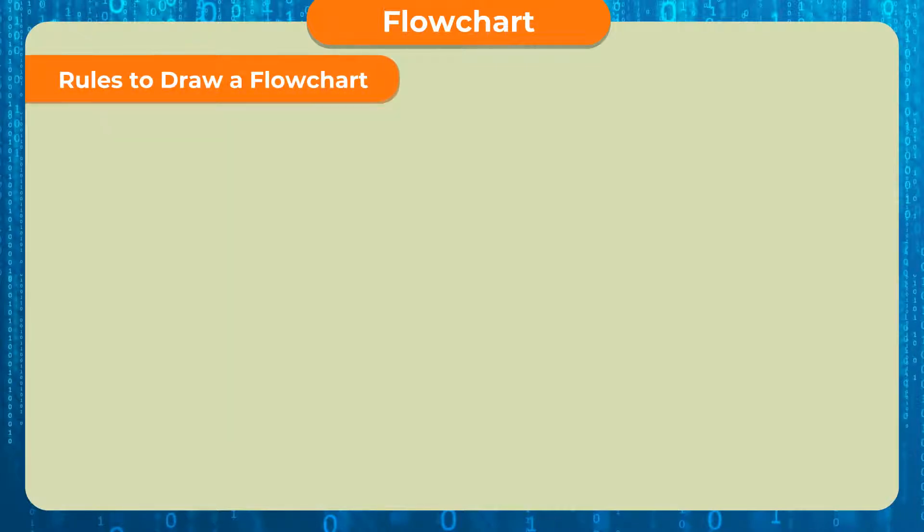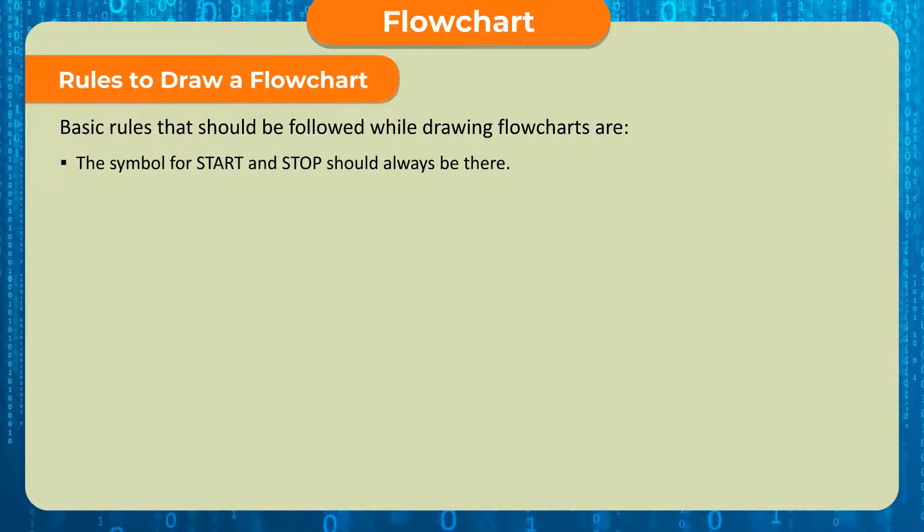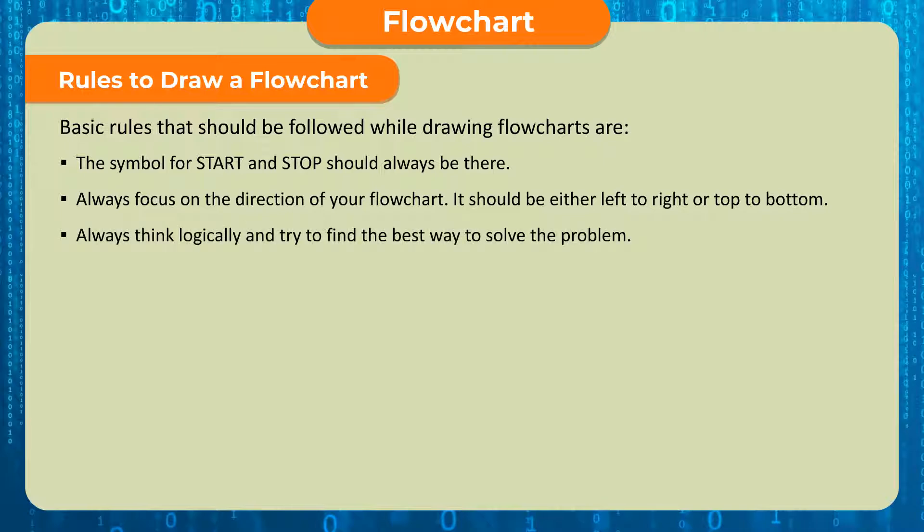Rules to draw a flowchart. Basic rules that should be followed while drawing flowcharts are: The symbol for start and stop should always be there. Always focus on the direction of your flowchart. It should be either left to right or top to bottom. Always think logically and try to find the best way to solve the problem.